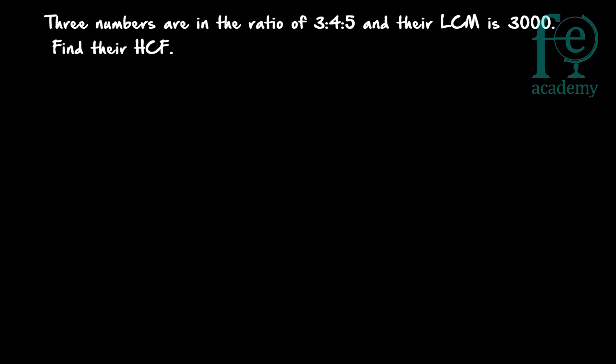Hi friends, welcome to today's class. Today's question is: 3 numbers are in the ratio of 3:4:5 and their LCM is 3000. Find their HCF. So here 3 numbers are in the ratio of 3:4:5 and their lowest common multiple is given as 3000. You have to find out the highest common factor, or the HCF.